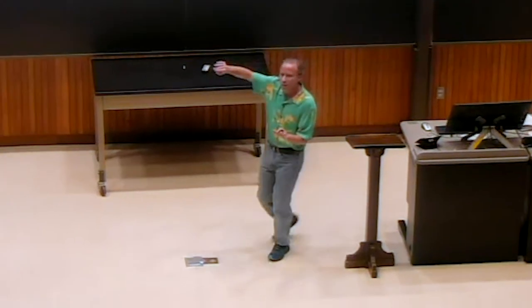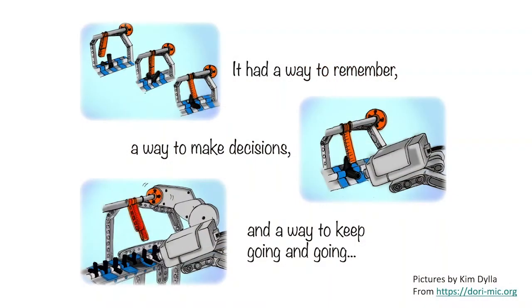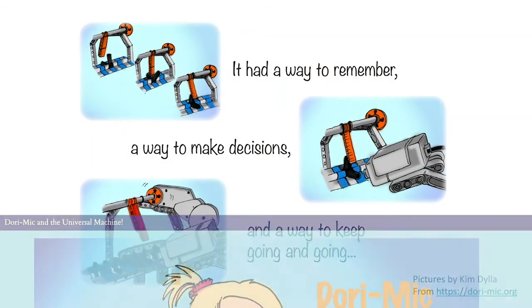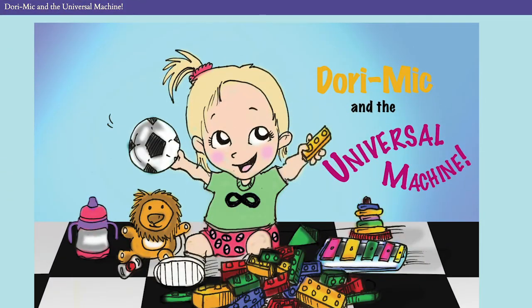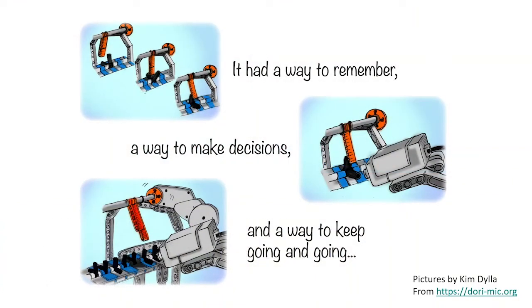We just need a way to remember. We need a way to make decisions. And we need a way to keep going. These pictures are from my children's book on universal computers. I have books to give away. Once you've got those, you can build a universal machine, and you can compute anything you can imagine.